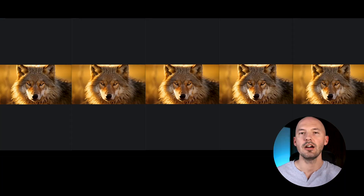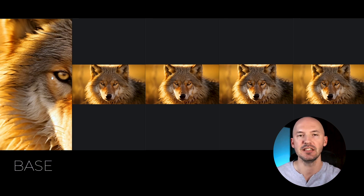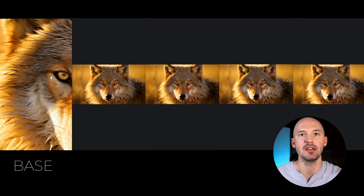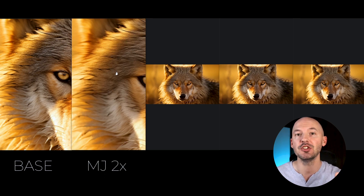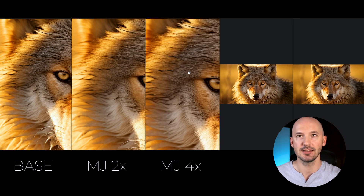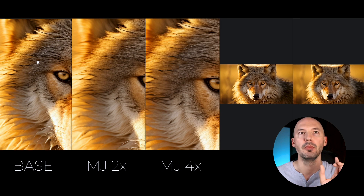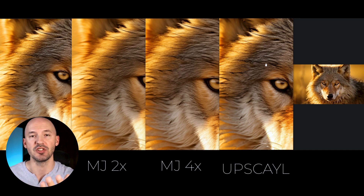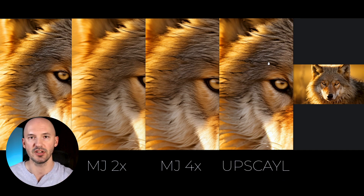Now let's go through one last comparison of an image with fur. Obviously from a distance you can't tell, so let's zoom in. On the left we have the base Mid Journey image — I don't even think it looks that bad when you zoom in. Here is the Mid Journey 2x upscaler, which looks pretty good. There's the 4x, and the longer you look at the upscale, the more the original just does not look very good. Here's the result from Upscale, the free software.